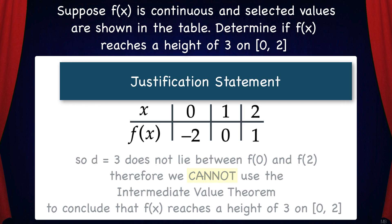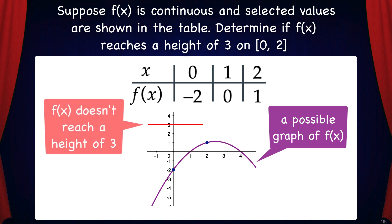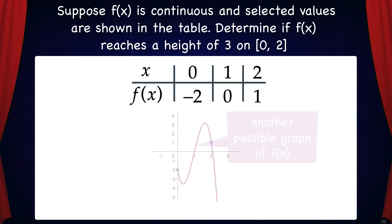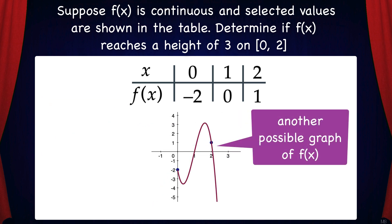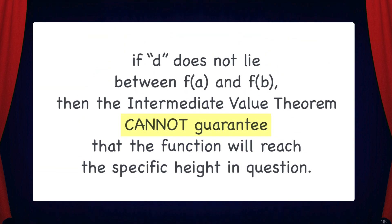f(x) could be a function like this — as you can see, it passes through all the points given in the table but it doesn't reach a height of 3 on the interval 0 to 2. Alternatively, f(x) could be something like this; again it passes through all the points in the table, but this time it does reach a height of 3. The main point is: if d does not lie between f(a) and f(b), then the Intermediate Value Theorem cannot guarantee that the function will reach the specific height in question.